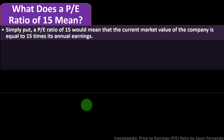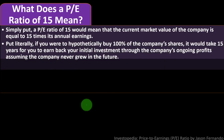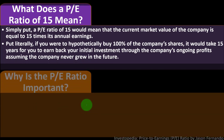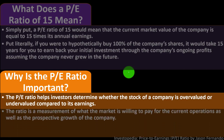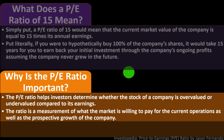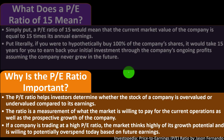Simply put, a P/E ratio of 15 means the current market value of the company equals 15 times its annual earnings. Put literally, if you were to buy 100% of a company's shares, it would take 15 years to earn back your initial investment through ongoing profits, assuming the company never grew. The P/E ratio is important because it helps investors determine whether a stock is overvalued or undervalued compared to its earnings, and it measures what the market is willing to pay for current operations as well as prospective growth. If a company is trading at a high P/E, the market thinks highly of its growth potential and is willing to potentially overspend today based on future earnings.